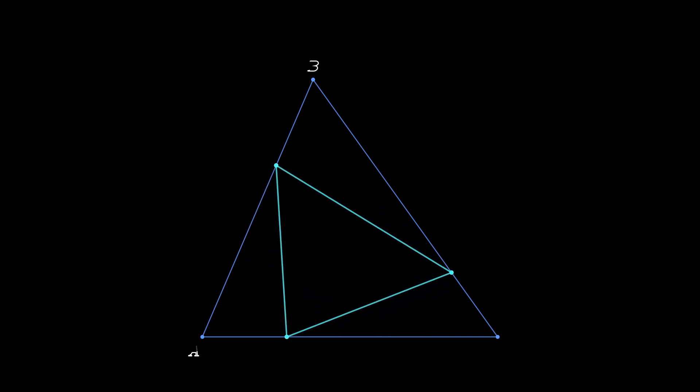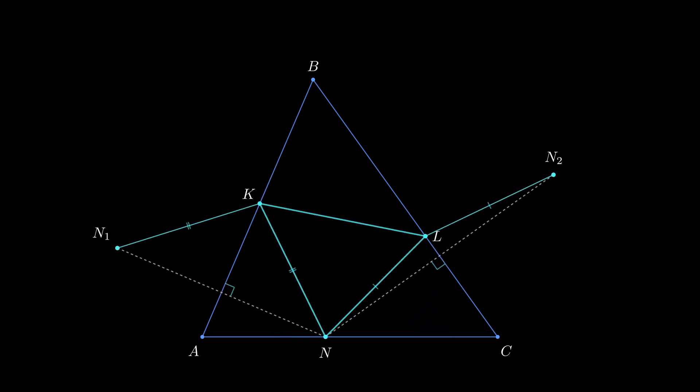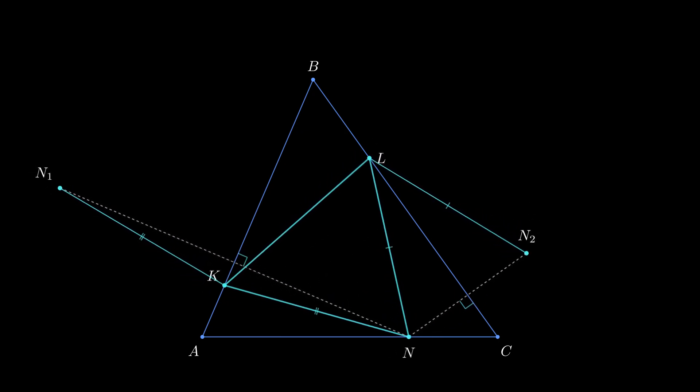So, let's try to reflect point N over lines AB and BC. Then, segments NK and N1K are equal, so as NL and N2L. Think about what does this construction show us?